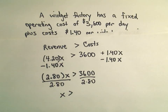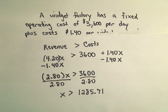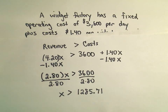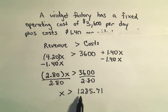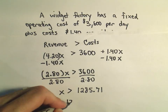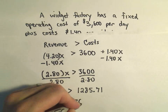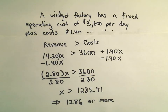I'm going to use a calculator here: 3,600 divided by 2.80 gives me 1,285.71. So now we have to interpret things a bit — you can only make a whole number of objects. It basically says you have to make 1,285.71 or more, so that tells us we would have to make 1,286 or more widgets to make a profit.